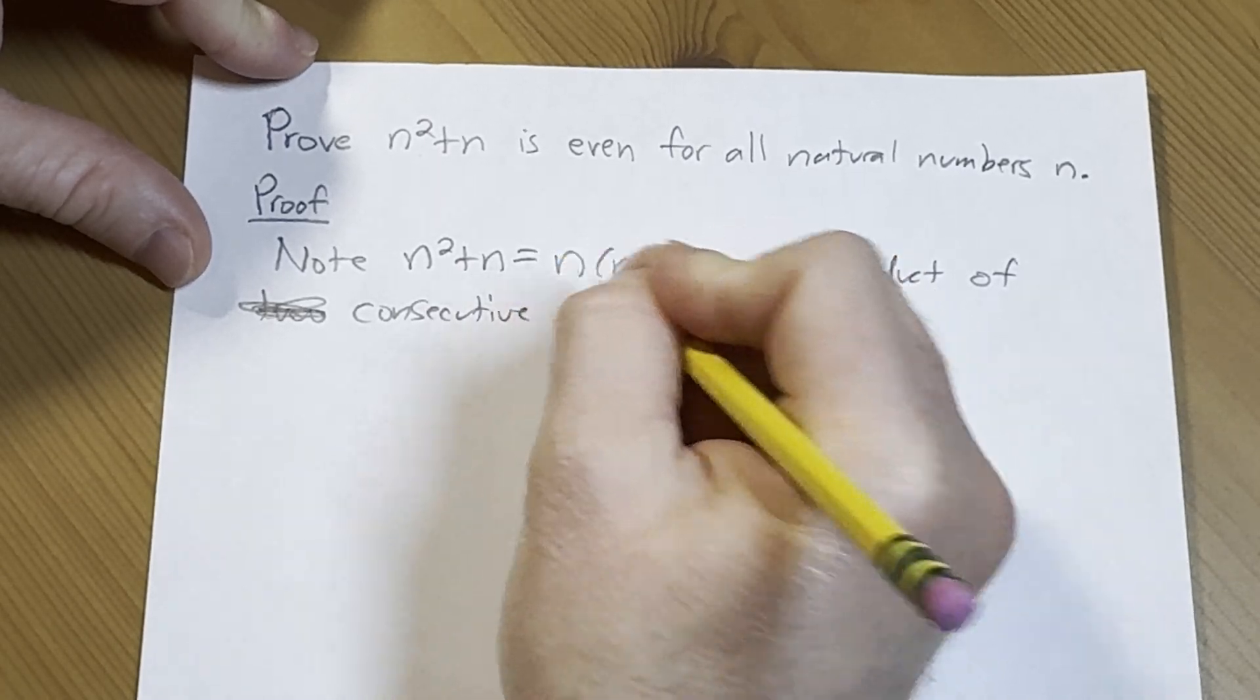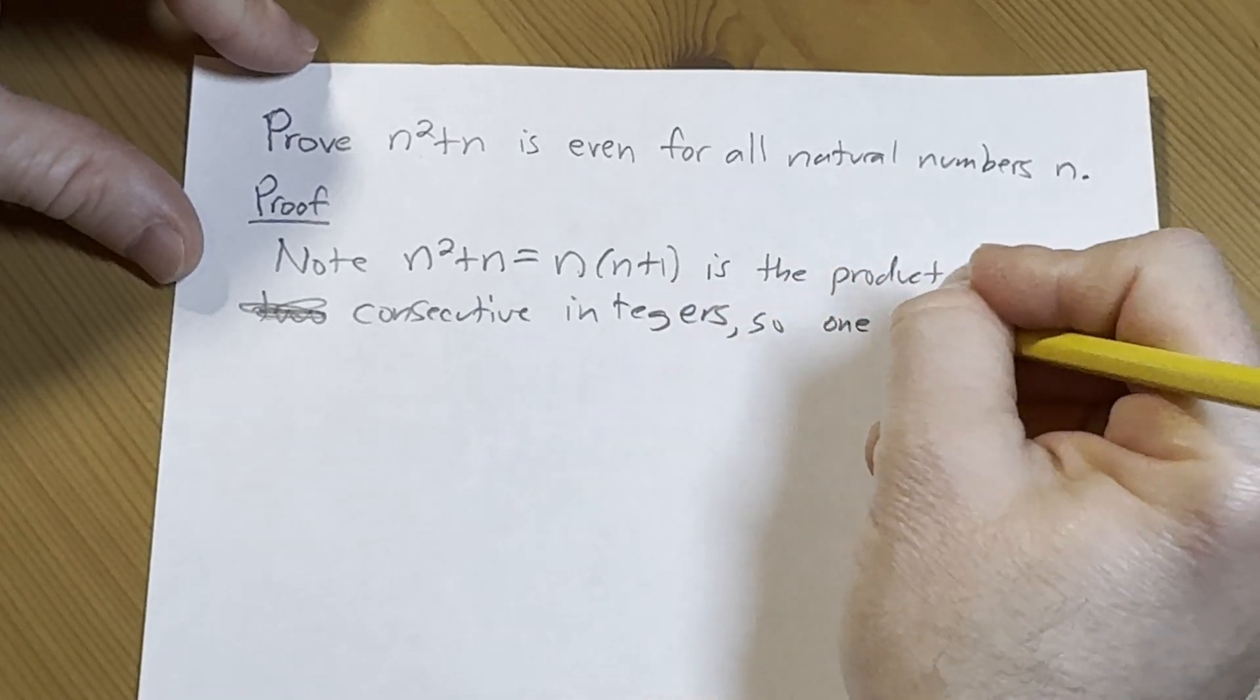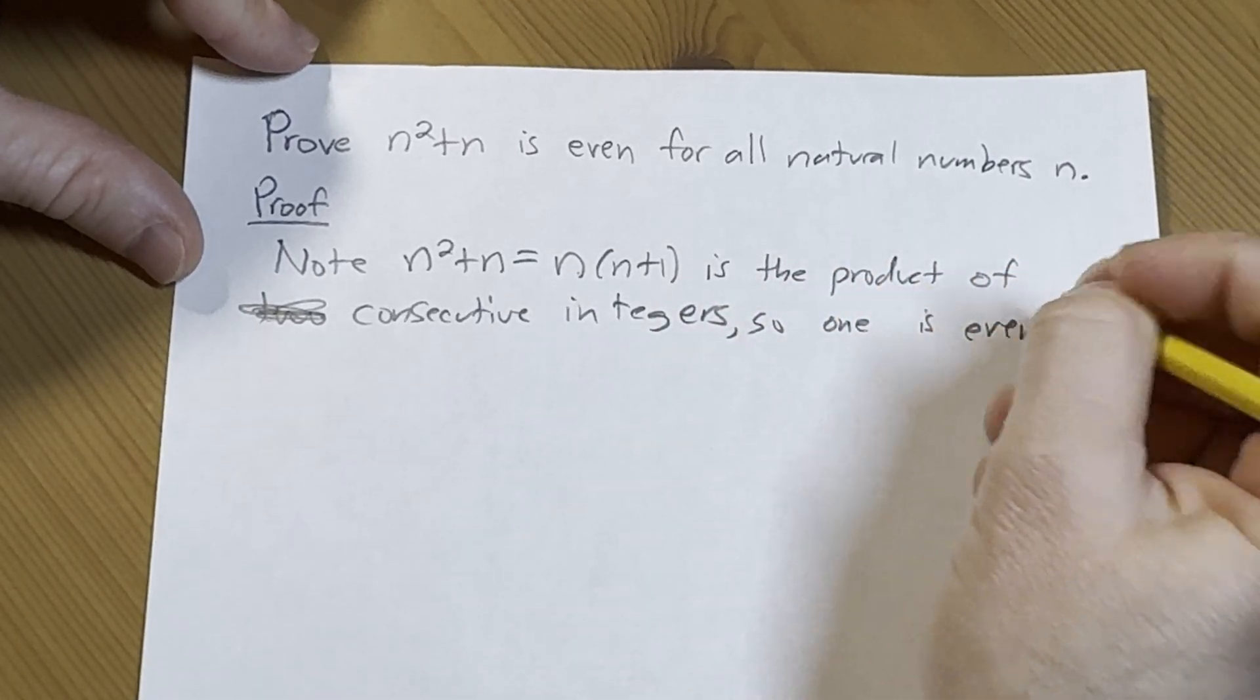So obviously there's two because we have n and n plus 1. So one is even and one is odd.